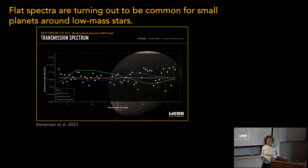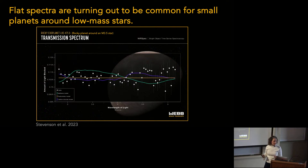Is the purple one showing the presence of something in the atmosphere? No, it's not showing it — it's just the model. What is causing it to have a shape at all? It's carbon dioxide molecules.